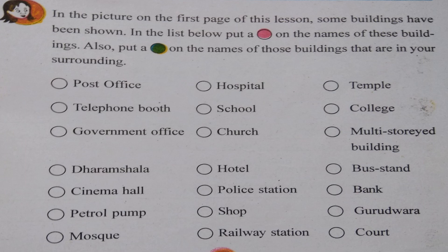Next, in the picture on the first page of this lesson, some buildings have been shown. In the list below, put a red mark on the names of these buildings. Also put a green mark on the names of those buildings that are in your surroundings. You can put a red mark on the post office, hospital, and school — these are the three buildings seen in the picture. You have also seen one shop. Now tick mark with the red pen, and tick mark the buildings you have seen in your surroundings.